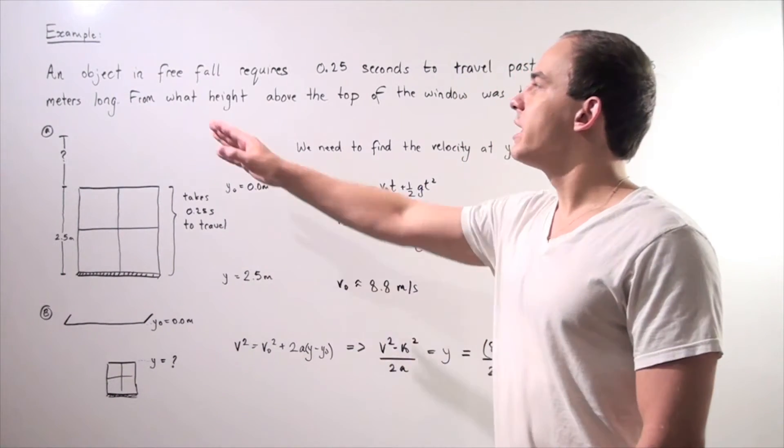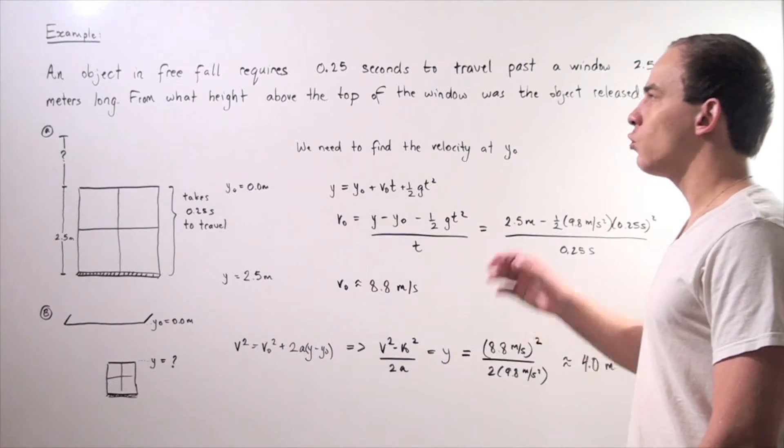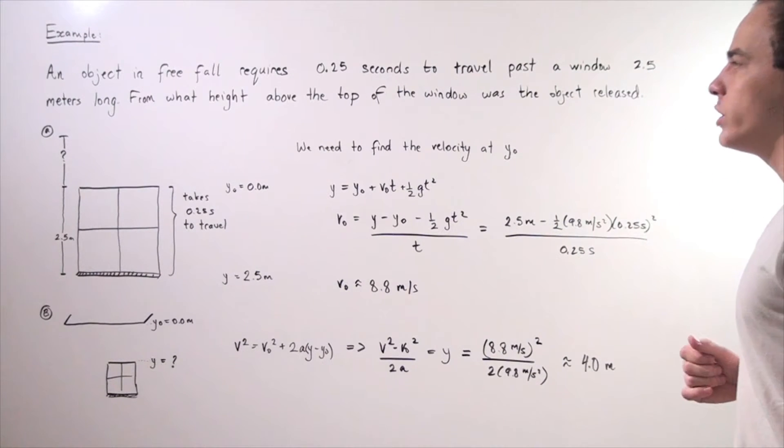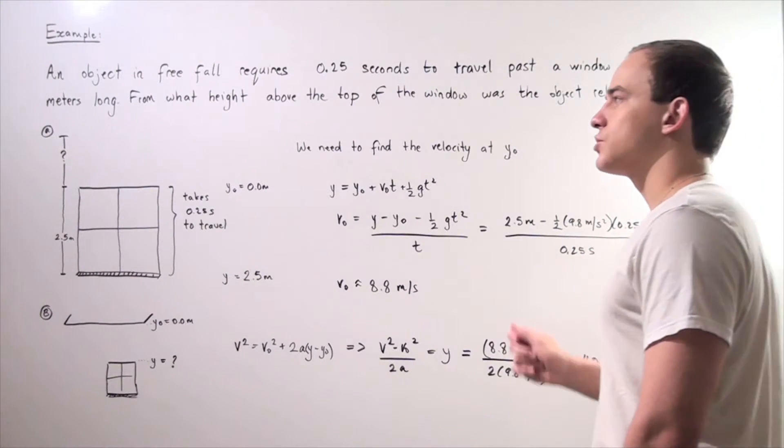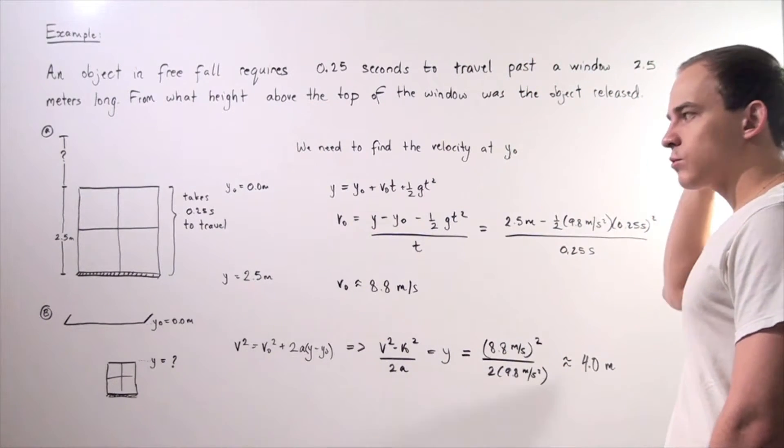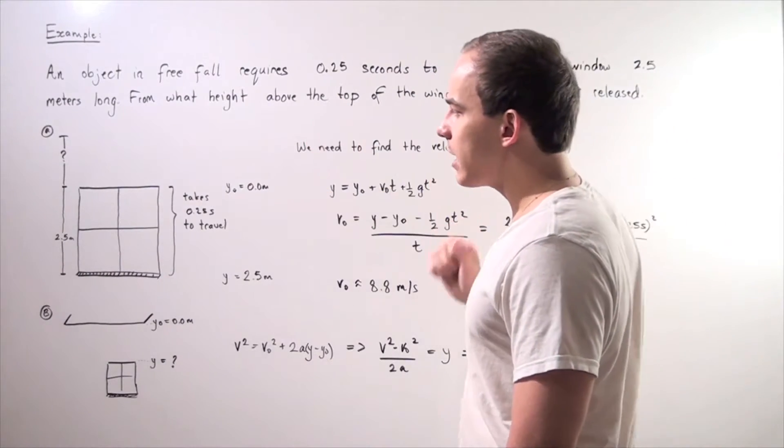So let's look at our problem. An object in free fall requires 0.25 seconds to travel past a window 2.5 meters long. From what height above the top of the window was the object released?